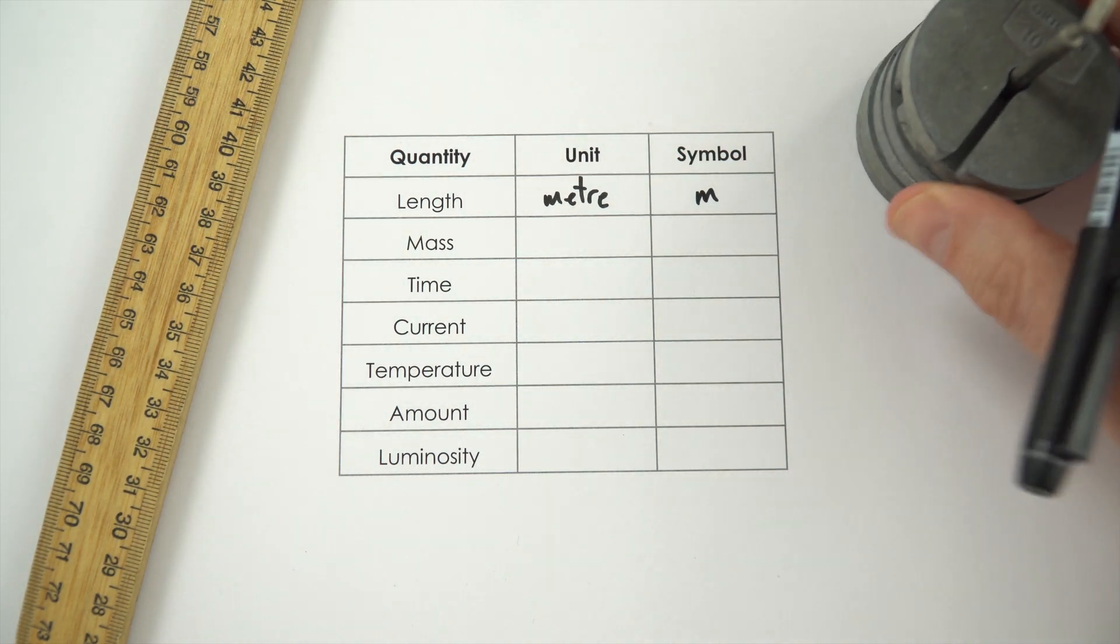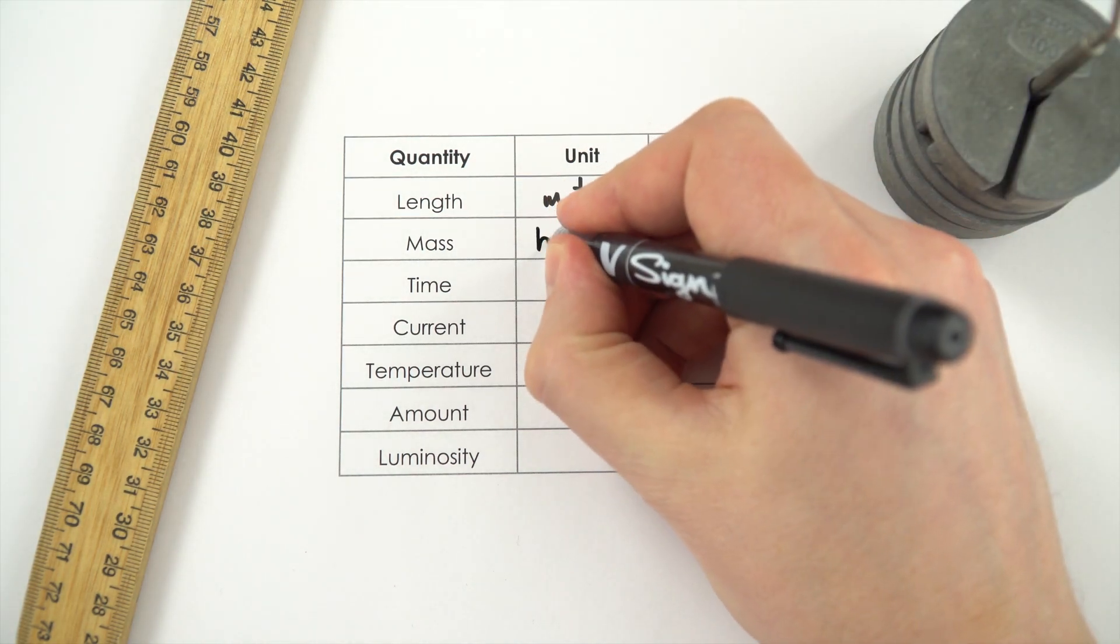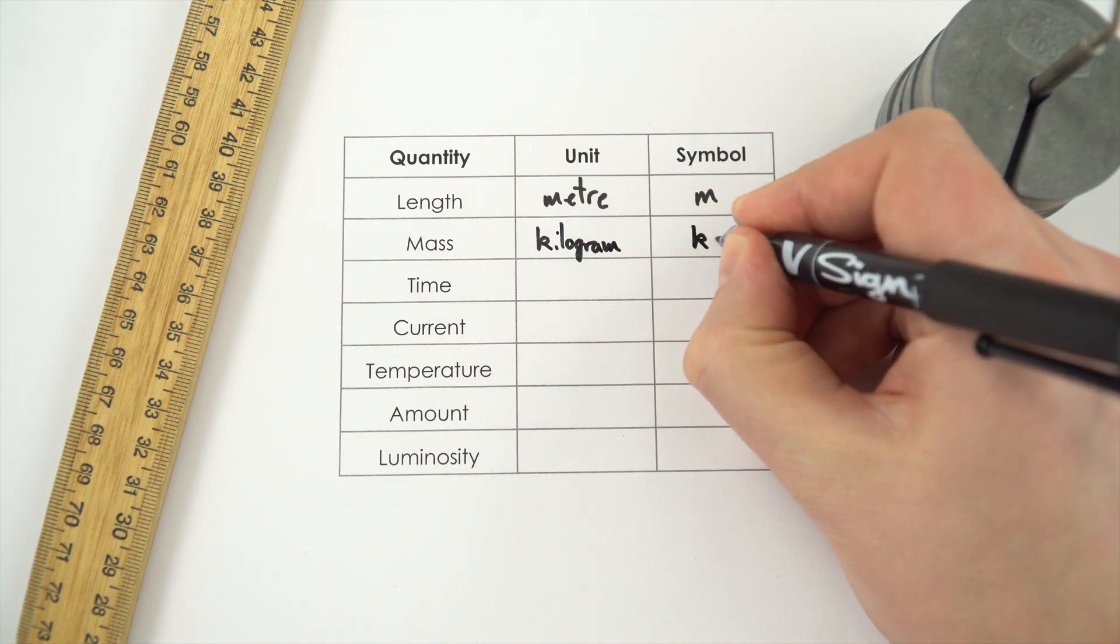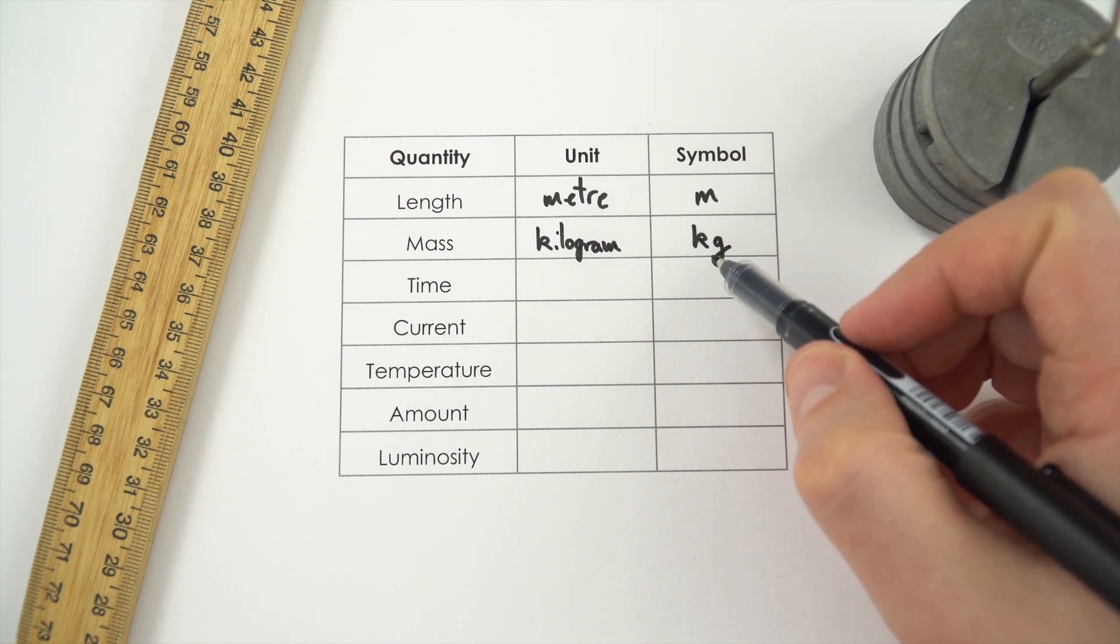So mass is the amount of stuff that's in things and we measure this in the kilogram and the kilogram has a symbol little k little g. It's important with our symbols to make sure that they're capital or lowercase letters.